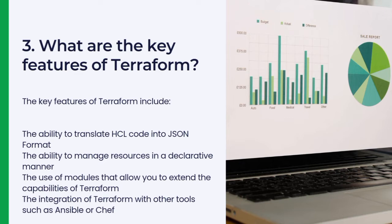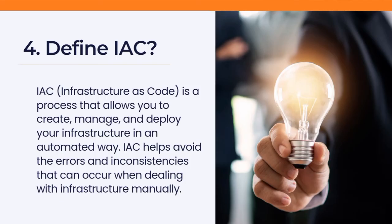Question three: What are the key features of Terraform? The key features of Terraform include the ability to translate HCL code into JSON format, the ability to manage resources in a declarative manner, the use of modules that allow you to extend the capabilities of Terraform, and the integration of Terraform with other tools such as Ansible or Chef.